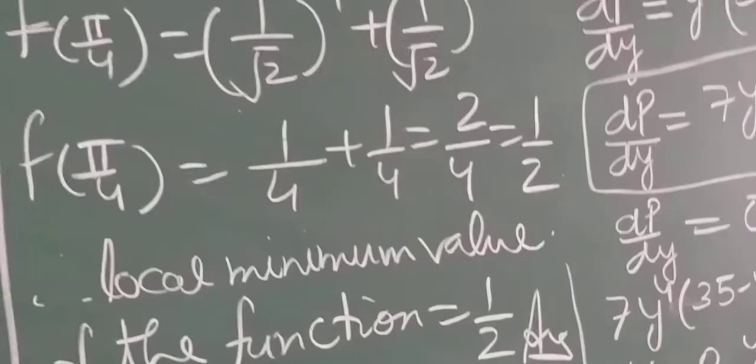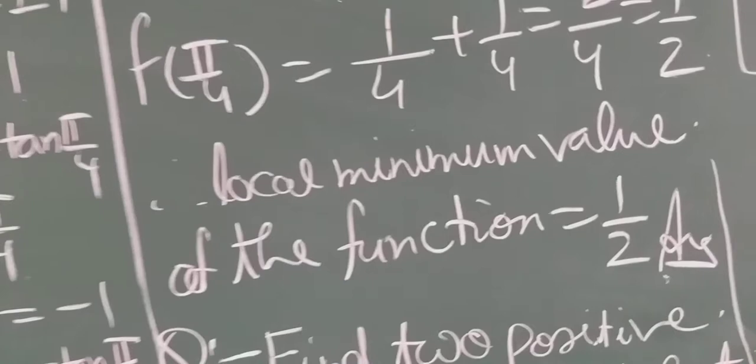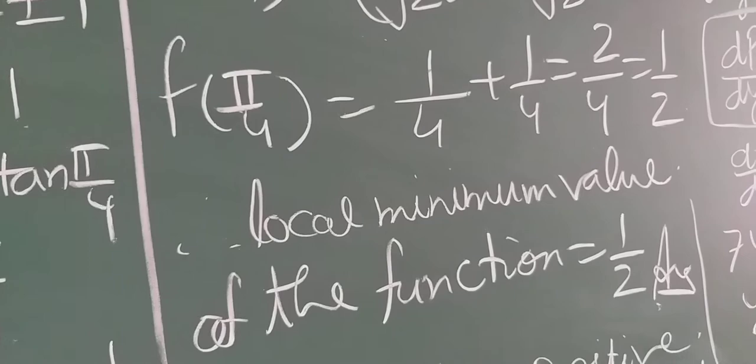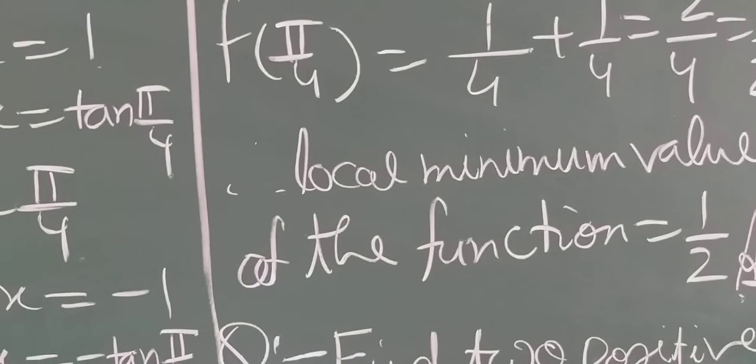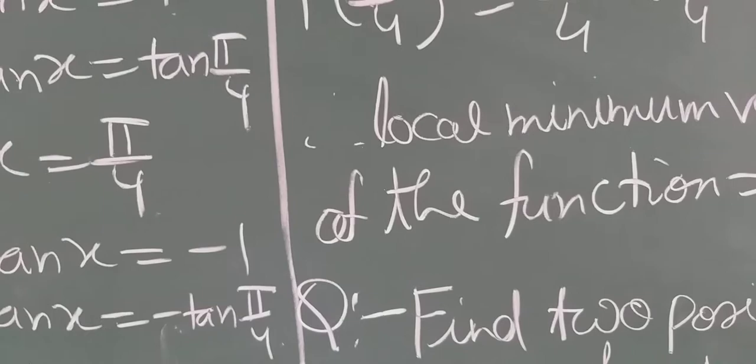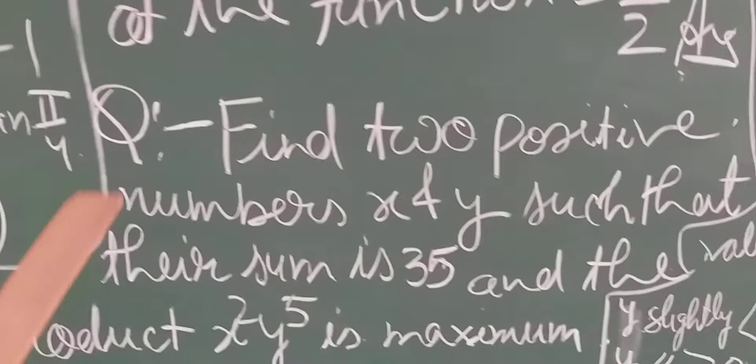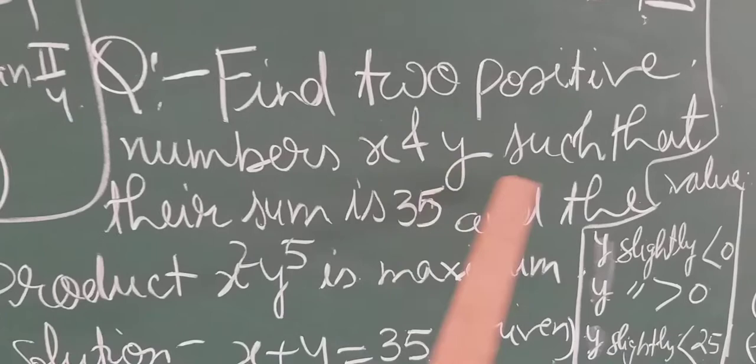By the help of the second order derivative test, we can easily find the point of local maxima and local minima and the local maximum and local minimum values of the function. Now let us solve some word problems related to maxima and minima. The first problem: find two positive numbers x and y such that their sum is 35 and the product x²y⁵ is maximum.